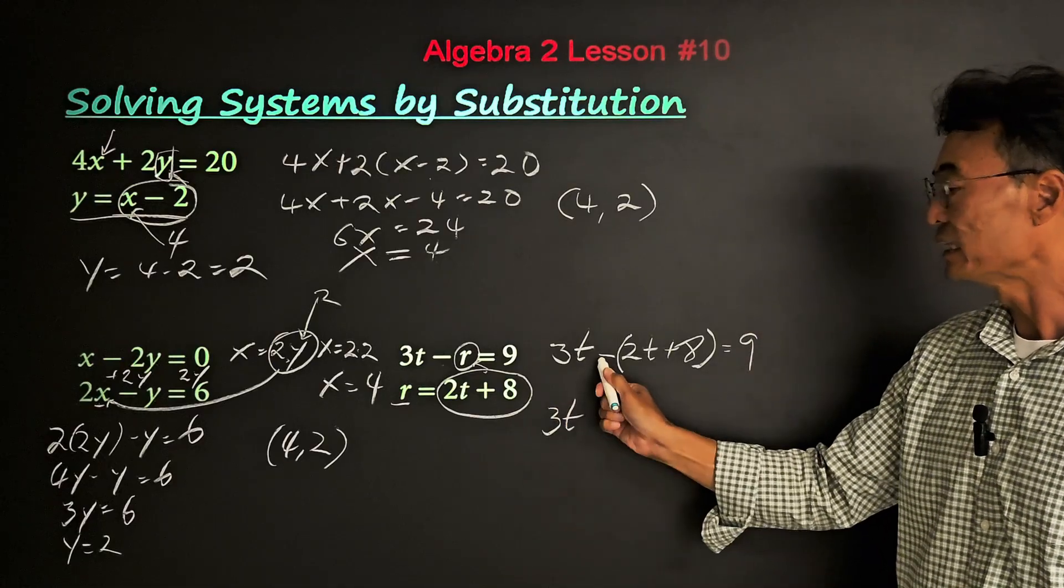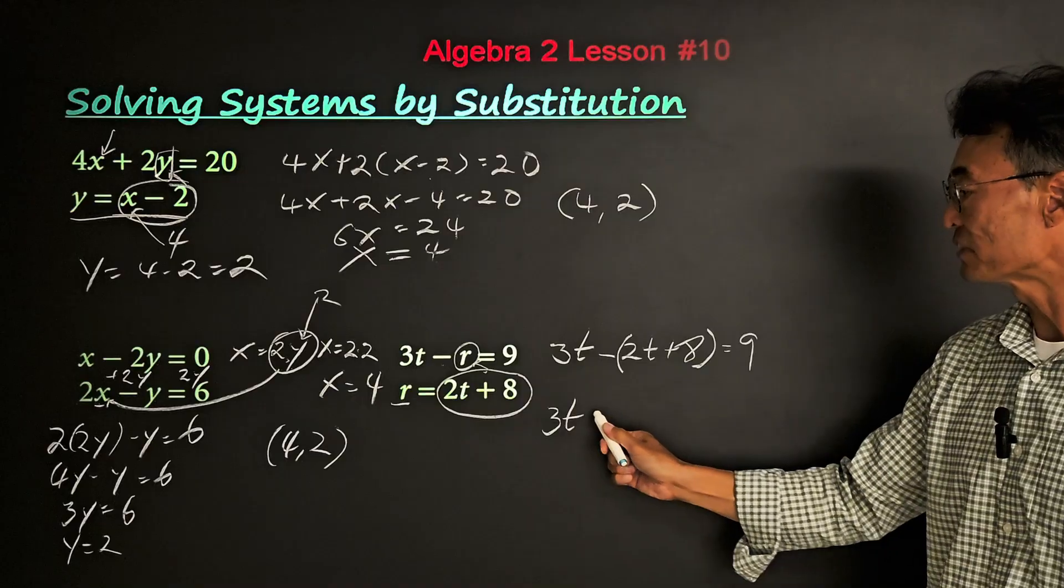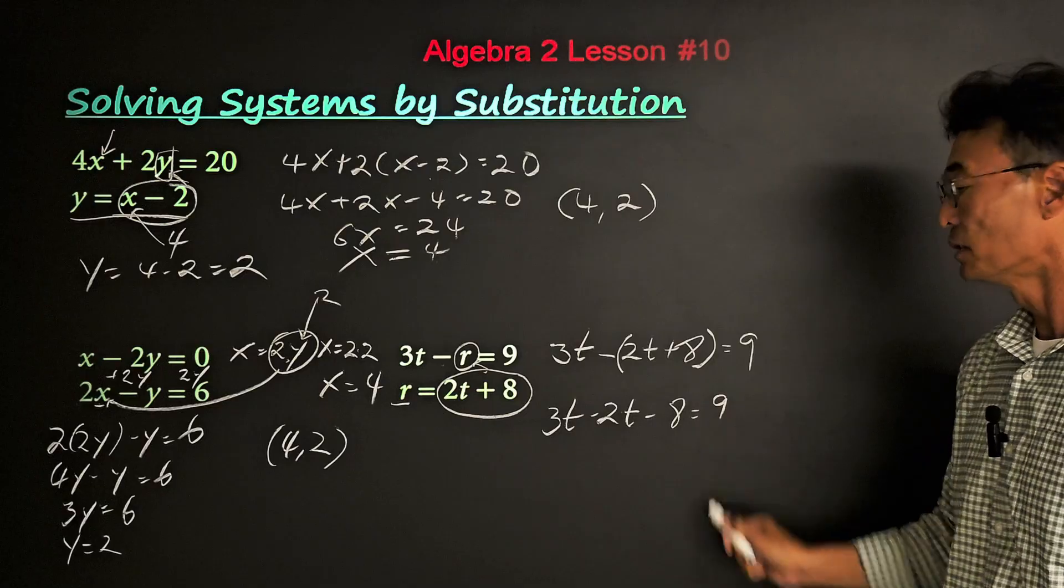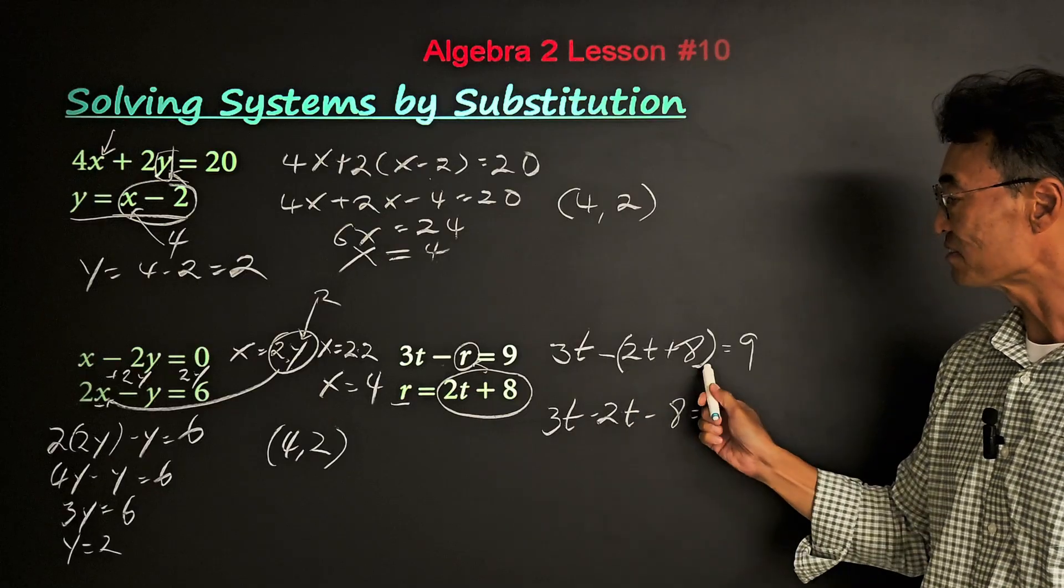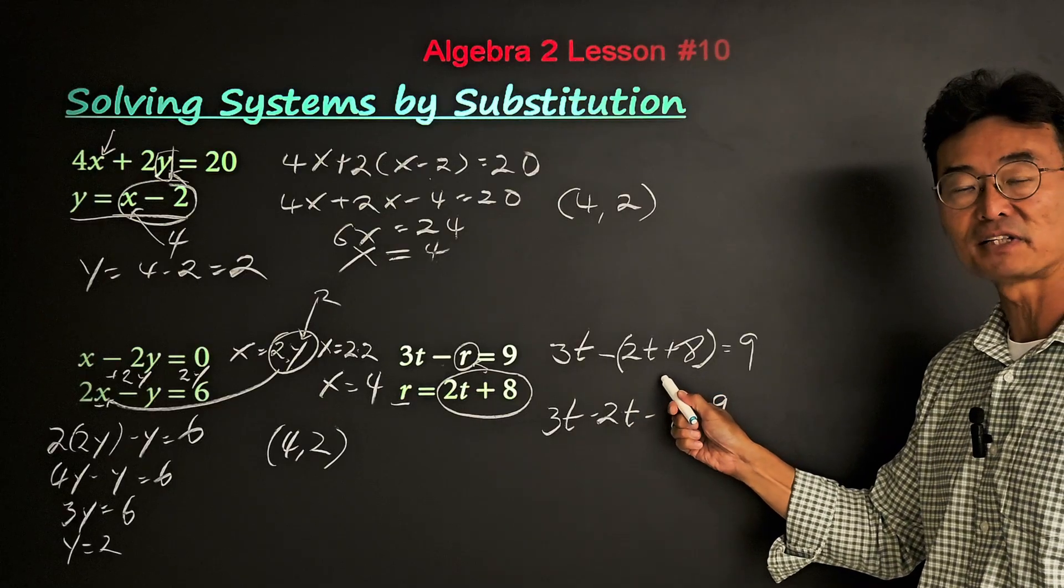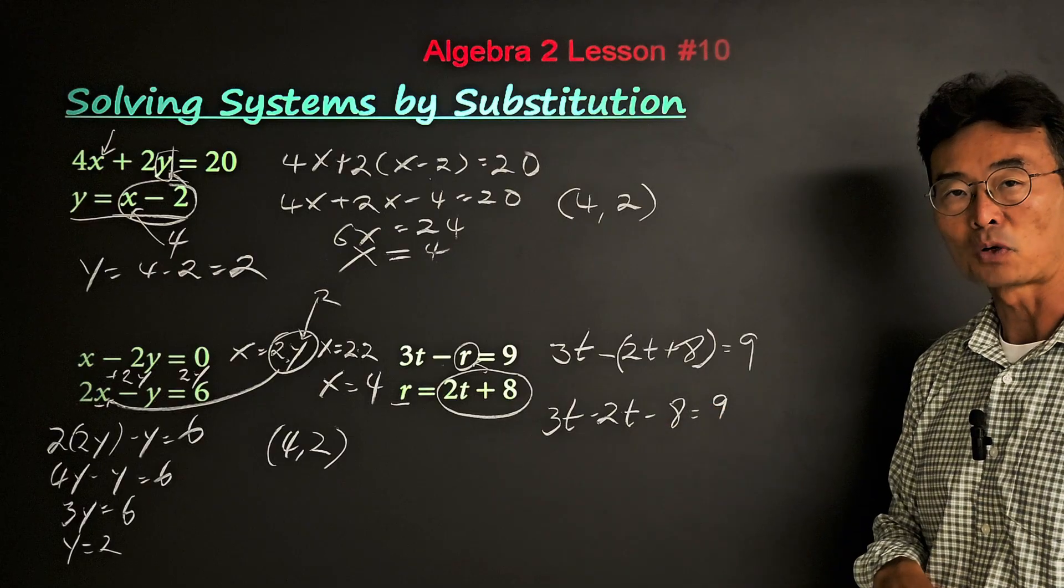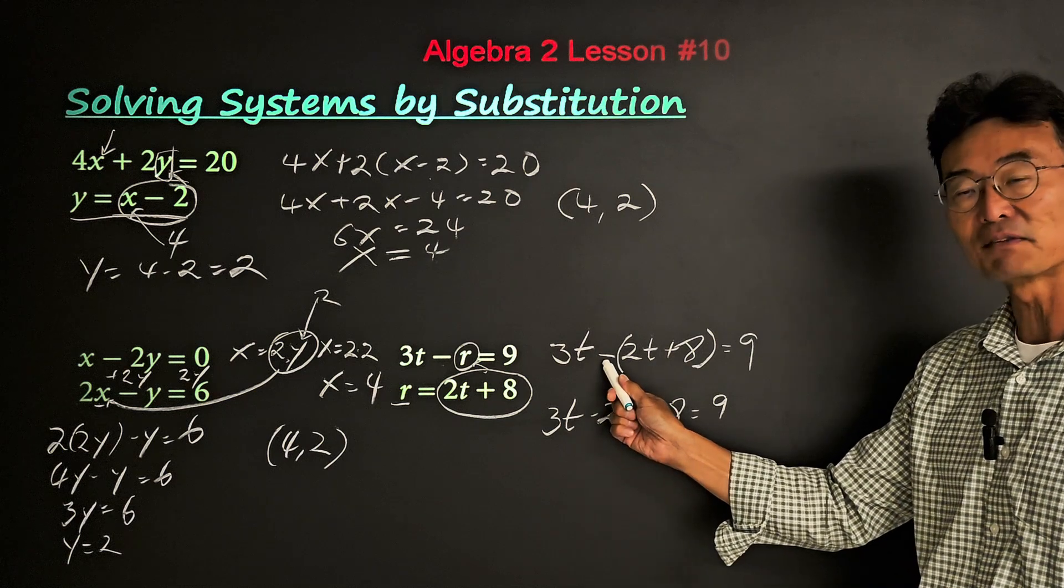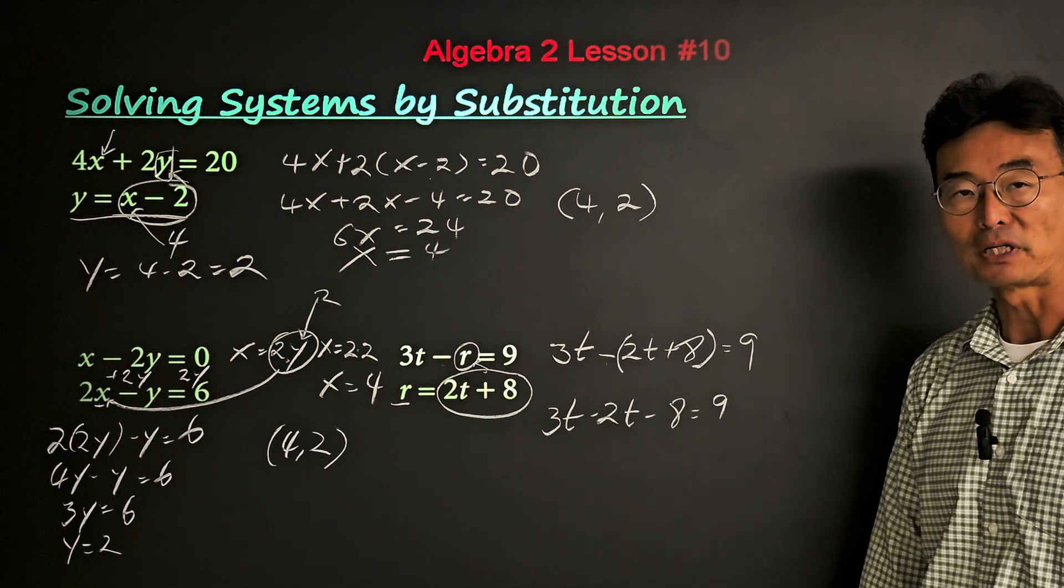So we'll go ahead and take that negative sign and distribute it into the parentheses. We'll make it negative 2t minus 8 equals 9. Notice without parentheses we would have stayed with that positive 8, which would have given us the wrong answer. Rather, it must be a negative 8 once we distribute that negative sign.